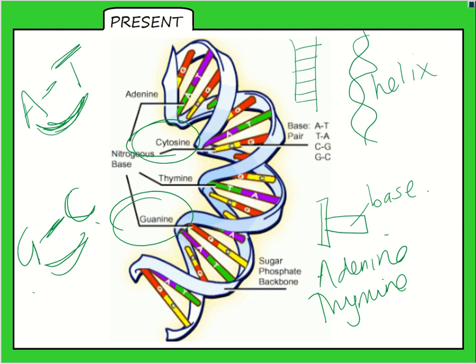Those complementary base pairs are secured between them with bonds called hydrogen bonds, which are actually very weak. But when the DNA strand is twisted into its helix, those hydrogen bonds in the middle are protected — so it doesn't matter that they're weak, and that means it can be a stable polynucleotide.